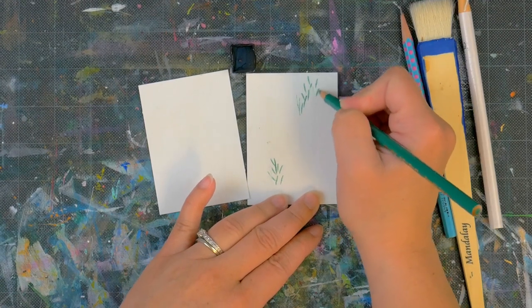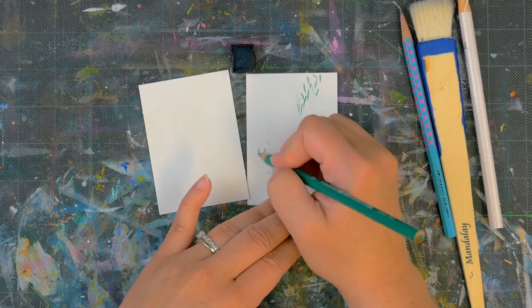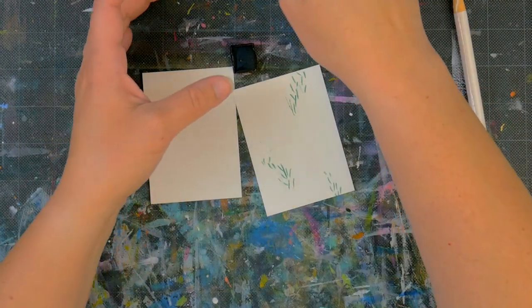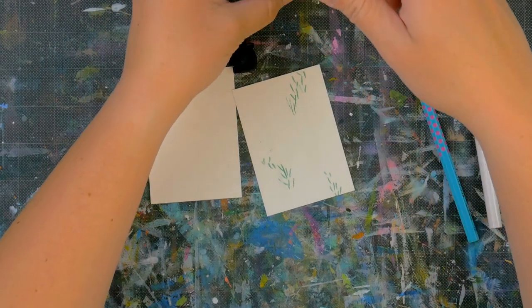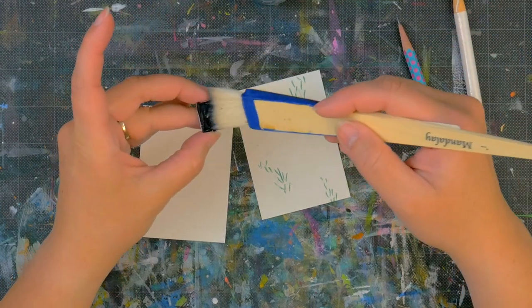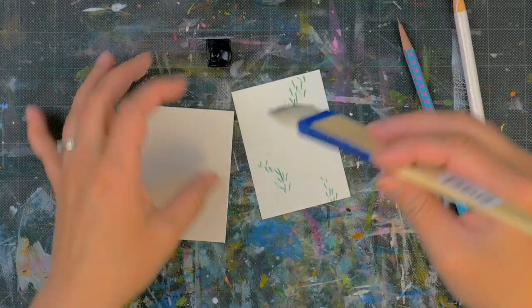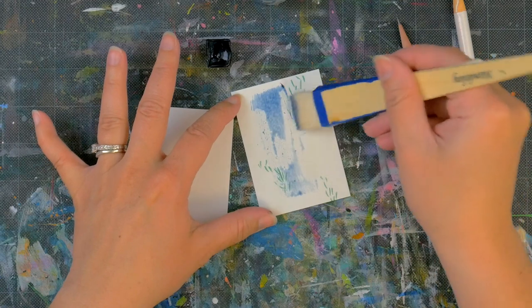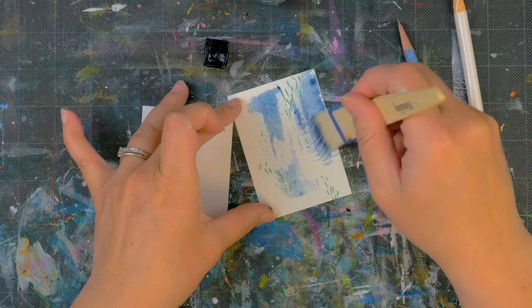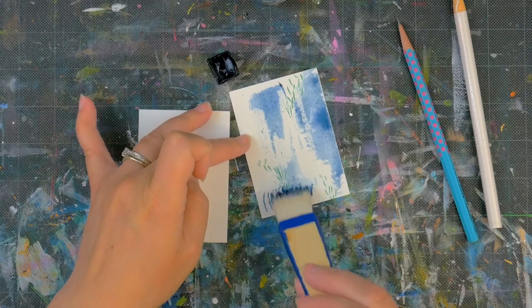Now let's add our watercolor and see what we get. These are natural hairs in this brush and it's really gonna pick up that pigment really nicely. We're gonna brush it on to our card, and anywhere where we have the China marker it's gonna resist that color.